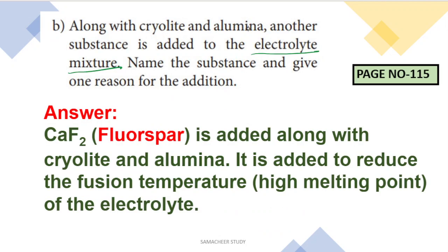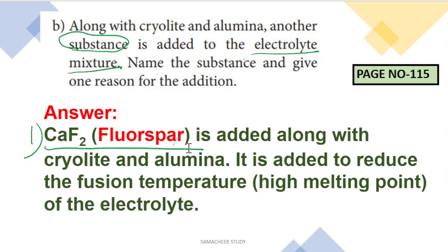Along with cryolite and alumina, another substance is added to the electrolyte mixture. Name the substance and give one reason for addition. The substance is fluorspar, with chemical formula CaF₂ — Calcium Fluoride. That is fluorspar.